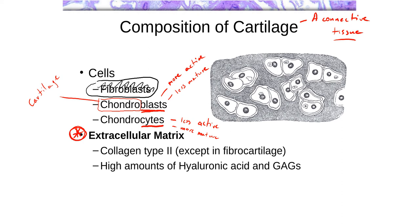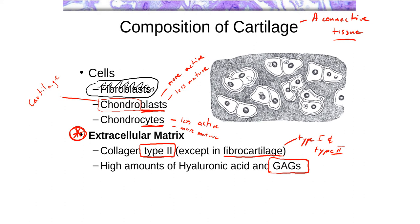The extracellular matrix contains type 2 collagen — one of the few places in the body where you'll find it. In fibrocartilage specifically, you'll see both type 1 and type 2 collagen, but in other types of cartilage, we tend to only find type 2. The main component of the ECM is proteoglycans and hyaluronic acid. The glycosaminoglycans are highly sulfated and therefore highly negatively charged.